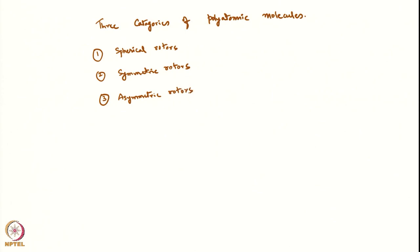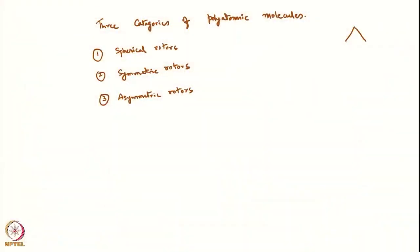One analogy I can give between spherical rotors, symmetric rotors and asymmetric rotors is like triangles. Think of it in terms of a triangle with three sides A, B, C. Correspondingly, one could have three rotation axes — axis A, axis B and axis C. For an equilateral triangle, you will see that A, B, C will be the same. So a spherical rotor is analogically like an equilateral triangle.